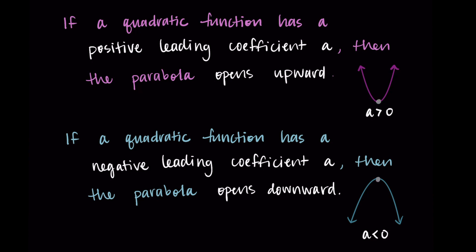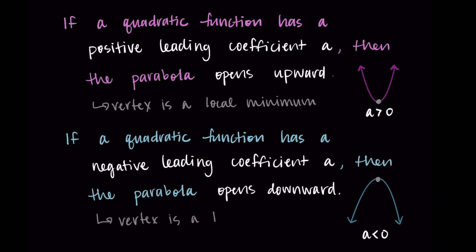Connecting to previous concepts: if the parabola opens upward, the vertex is a local minimum — the function goes from decreasing to increasing at that point. If the parabola opens downward, the vertex is a local maximum — the function changes from increasing to decreasing. That's an introduction to quadratic functions in standard form and their graphs as parabolas. Thanks for watching, and I'll talk to you in the next one.